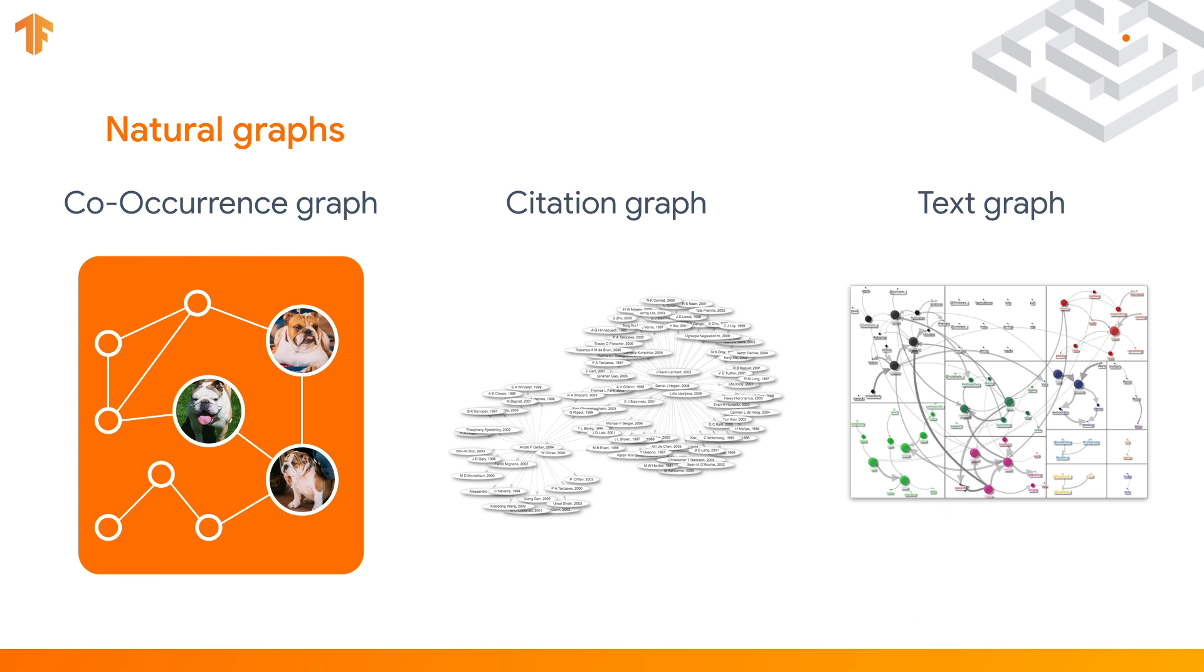Finally, for natural language applications, we can define a text graph where nodes represent entities and edges represent relationships between pairs of entities. Now that we understand what natural graphs are, let's look at how we can use them to train a neural network.